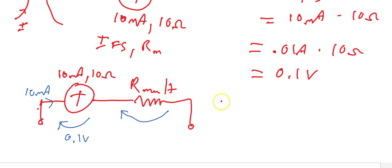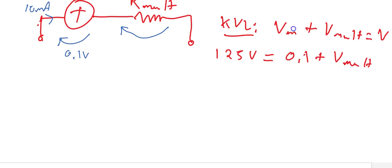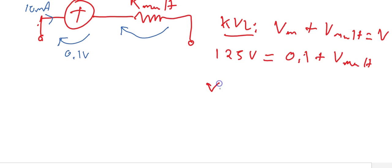And Kirchhoff's voltage law tells us that the voltage drop across the movement plus the voltage drop across the multiplier resistor will be equal to the total voltage of the circuit. So then the 125 volts will be equal to the sum of the 0.1 volts plus the voltage drop across the multiplier resistor.